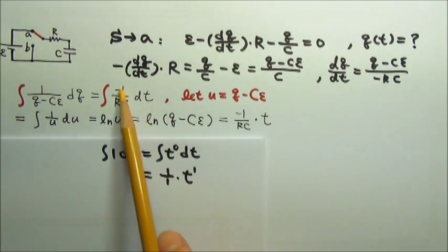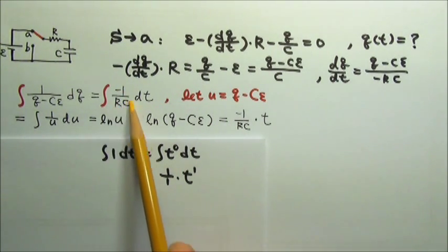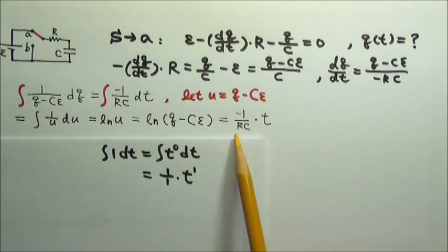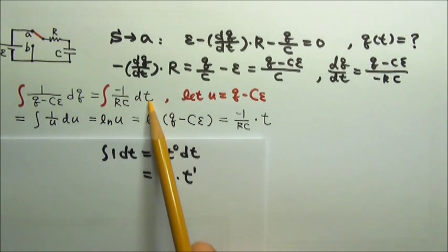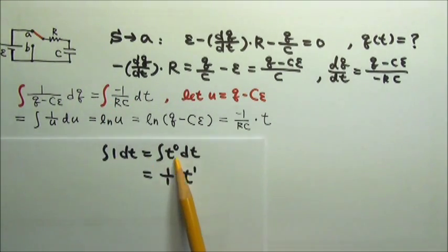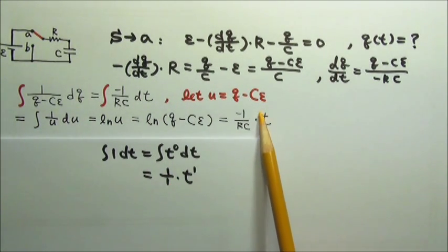For this side, we have negative 1 over RC, which is a constant, so we can take it out. And then what we have left is the integral of 1 dt, and 1 is t to the 0's degree. So when we integrate this, we gain 1 degree of power, and then we multiply that by 1 over 1. So we get t.